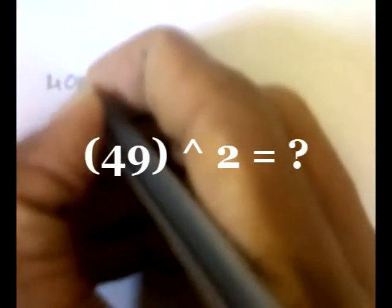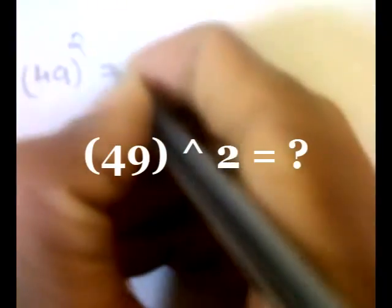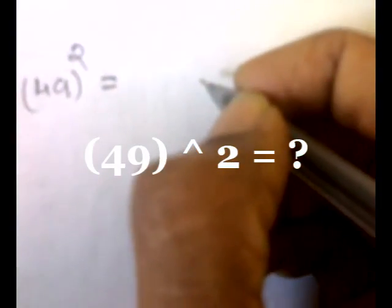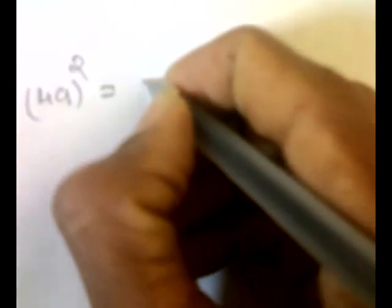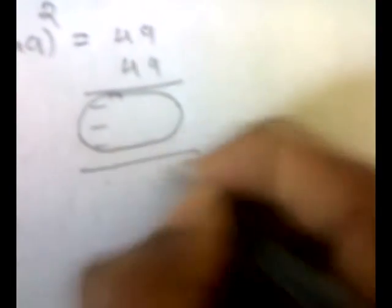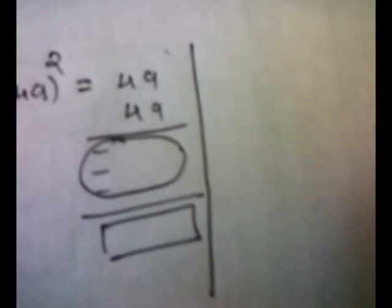Now let's see how we do 49 squared. In general what we do is 49 into 49 and we have to multiply this number — it will take 2 to 3 steps — and finally we get our answer. But by using our method, within fractions of seconds you can calculate it in your mind.